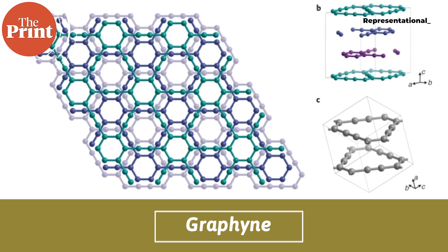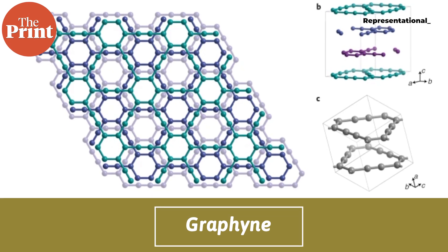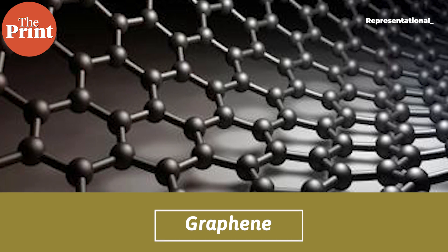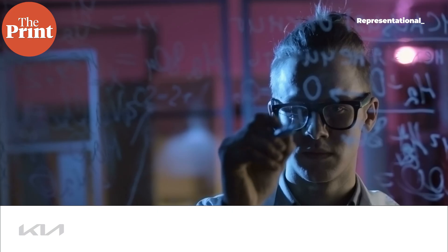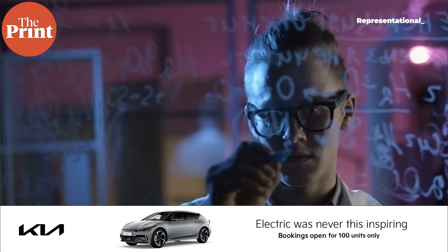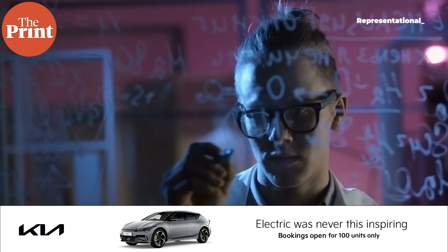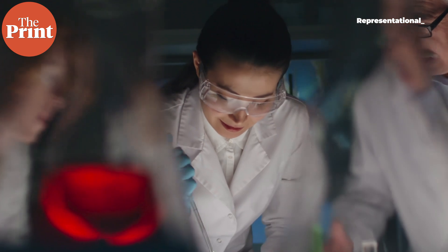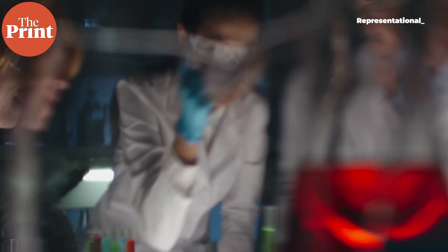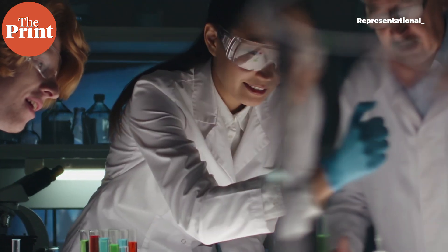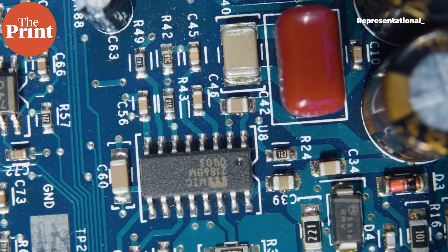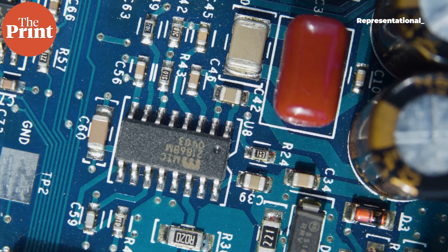Graphyne, a new form of carbon, has long been of interest to scientists because of its similarities to the wonder material graphene. For over a decade, scientists have attempted to synthesize this form of carbon without much success. But now, a team from the University of Colorado Boulder has found a new way to synthesize the material that could open the door to faster transistors and smaller electronic devices.